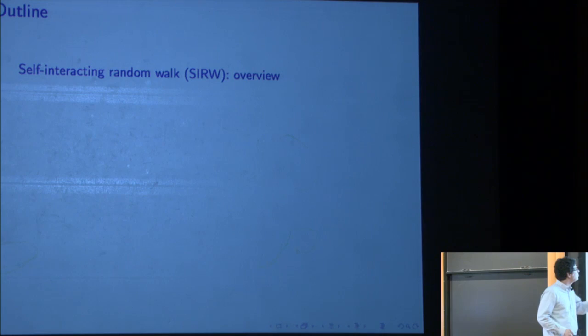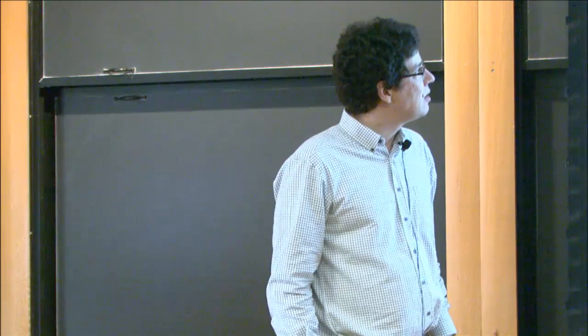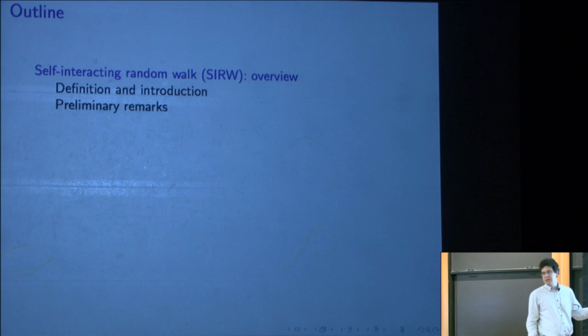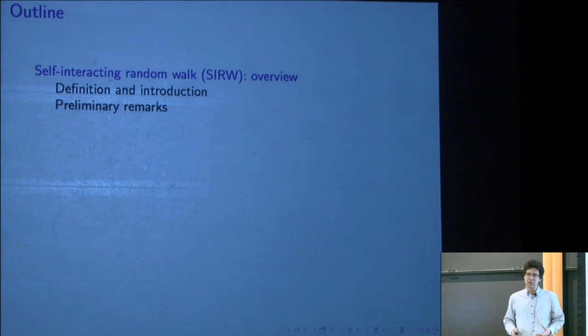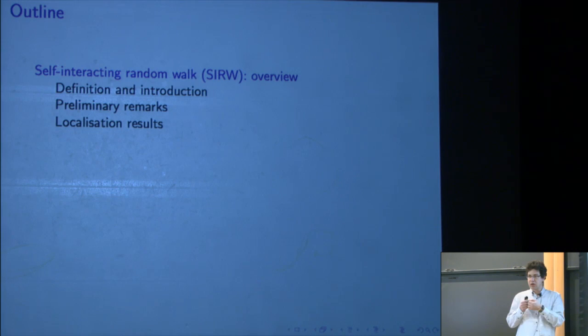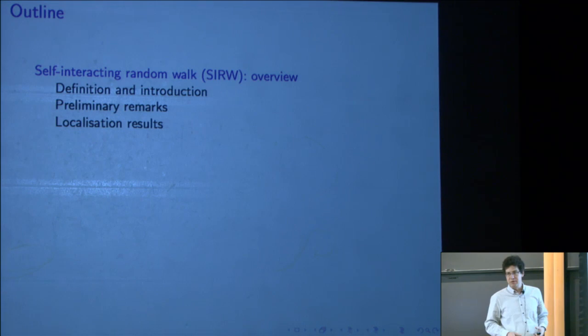I'll do a short overview of self-interacting random walks — I won't be able to cover everything because it's a huge topic. I'll start with definitions and introduction and make some simple computations to give good intuition on the type of behavior you can expect. Then I'll discuss localization results — localization not in the sense of statistical physics, but really localization of the walk. It can happen for a certain type of reinforcement that you eventually get stuck on a finite number of vertices.